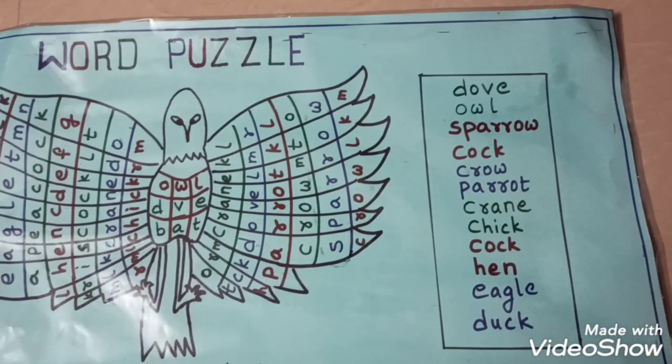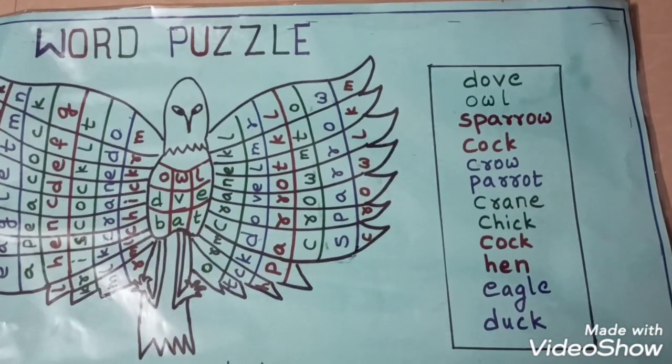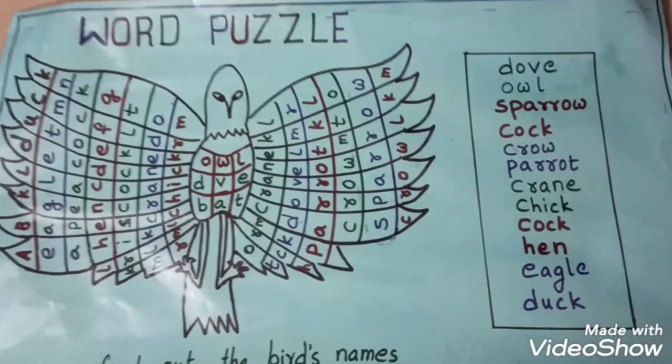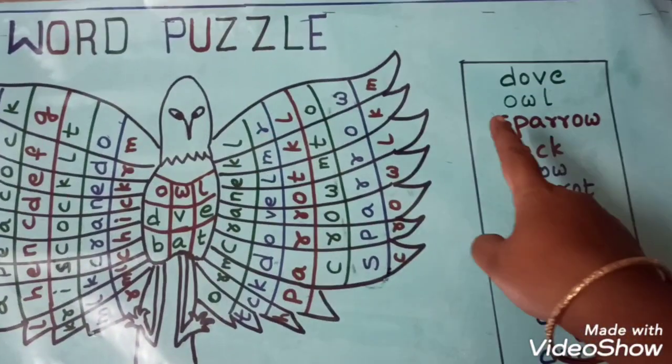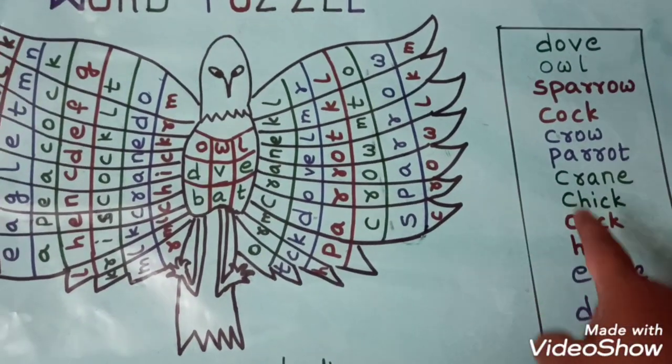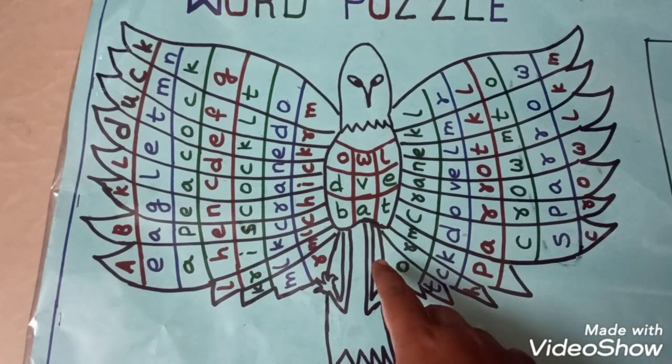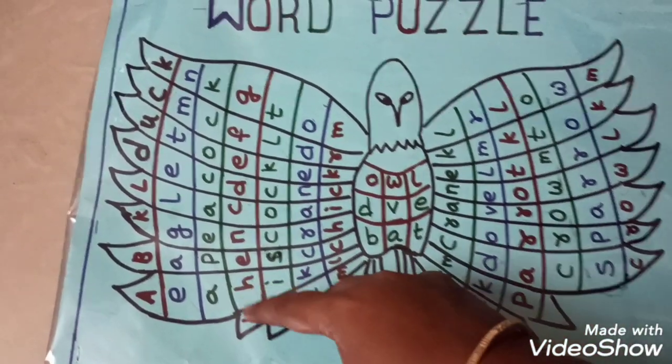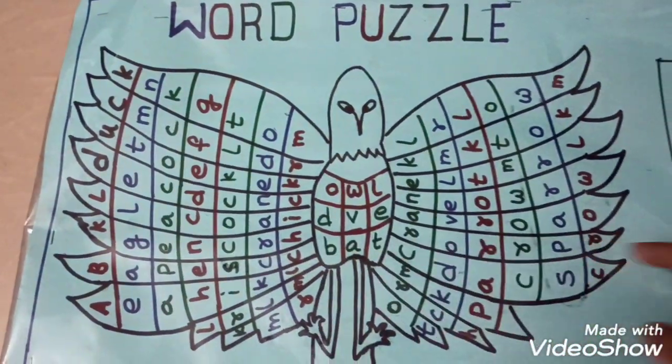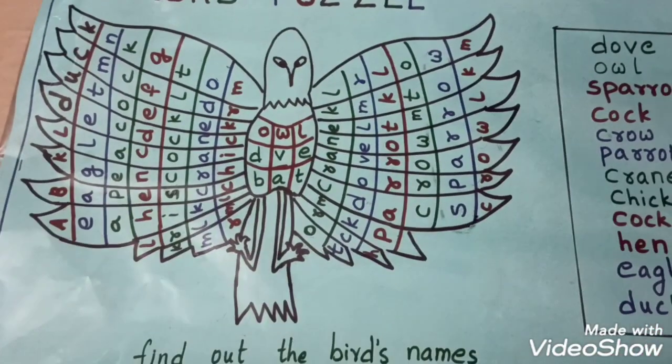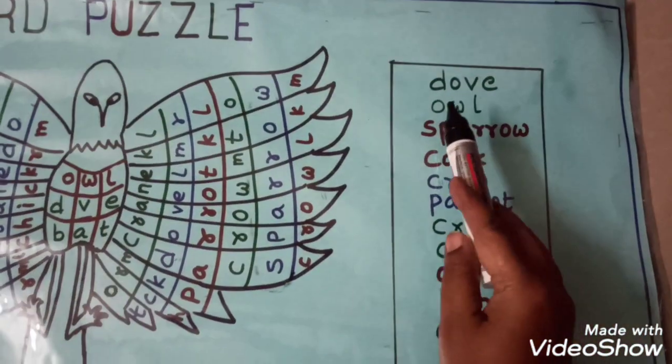Namaste teachers, this is the worksheet of word puzzle. Here in this worksheet I have given one box and wrote some bird names and drawn one eagle image. In this image I have written some bird names. First children will read the bird name here in this box.